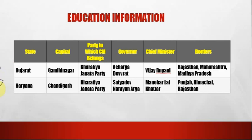The next state is Haryana. The capital of Haryana is Chandigarh. The party to which the CM belongs is Bharatiya Janata Party. The governor is Satyadev Narayan Arya. The chief minister is Manohar Lal Khattar. The borders are Punjab, Himachal Pradesh and Rajasthan.